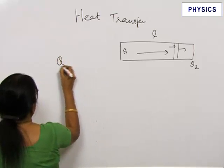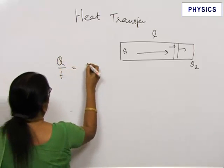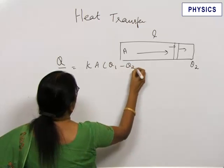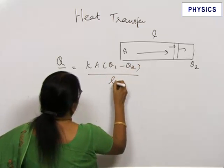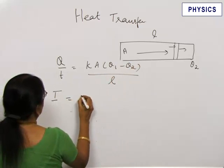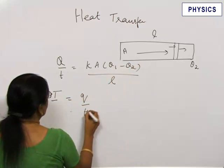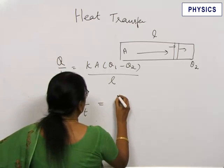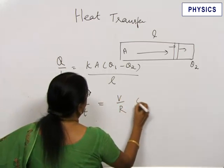Let us consider this equation Q by T equal to K A theta 1 minus theta 2 by L. Now let us compare this with the flow of electric current which is due to the flow of charge per unit time and this is equal to V by R, Ohm's law.